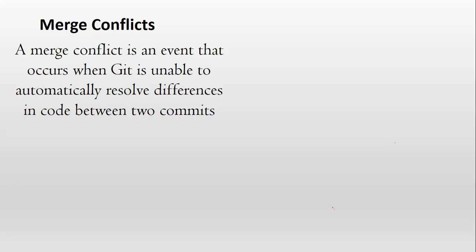A merge conflict is an event that occurs when Git is unable to automatically resolve differences in the code between two commits. Let's understand this with some sample diagram.